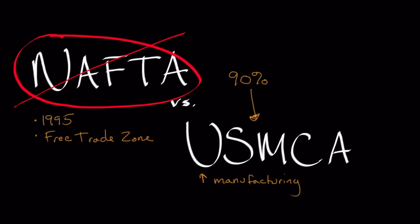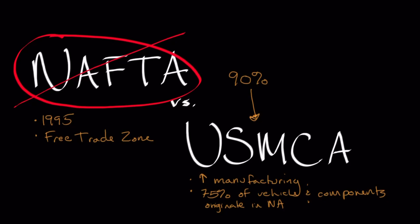There is a specific provision in the USMCA that in order to qualify for free trade status — looking specifically at car manufacturing — 75 percent of the vehicle and its subsequent components have to originate from a North American country. Those parts have to originate from the US, Mexico, or Canada, most likely a combination of all three. This is very characteristic of today's auto manufacturing, where the supply chain spans multiple countries.